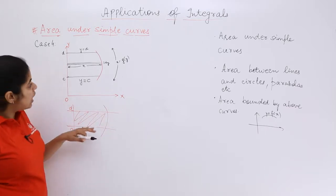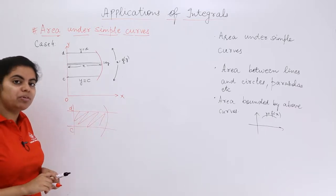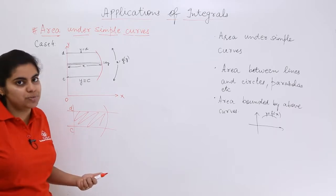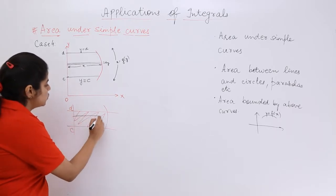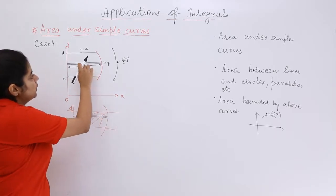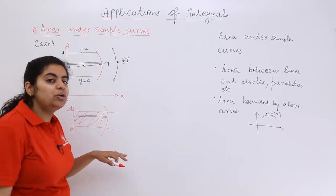So how to go about finding this area? What we did: we took some horizontal strips this time. So a sample strip would be something like this, which is drawn over here.